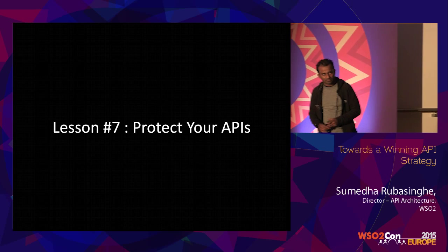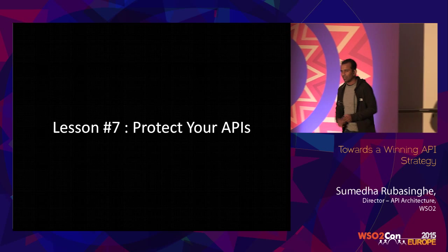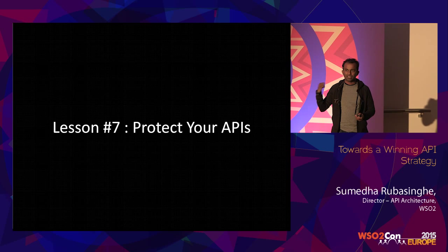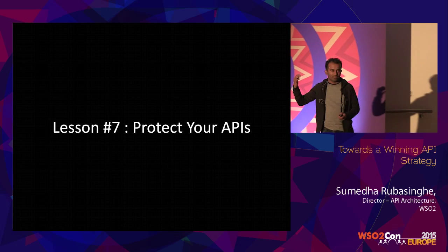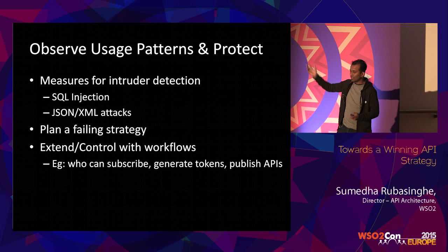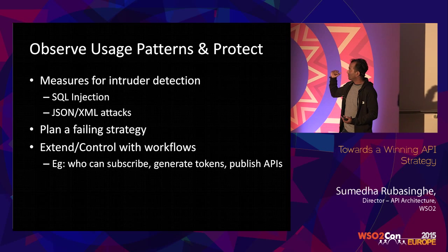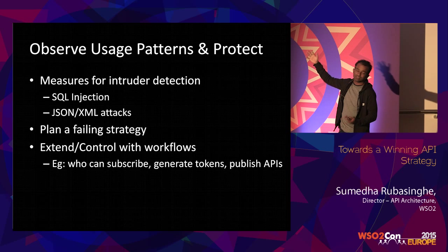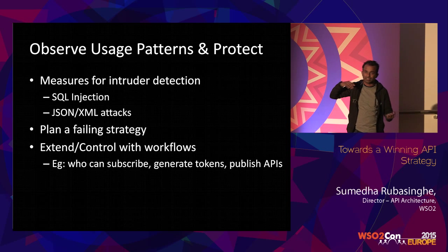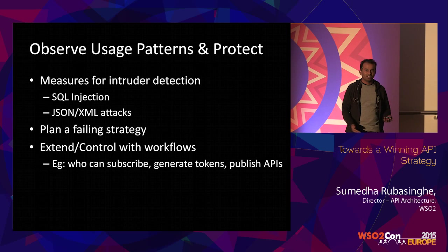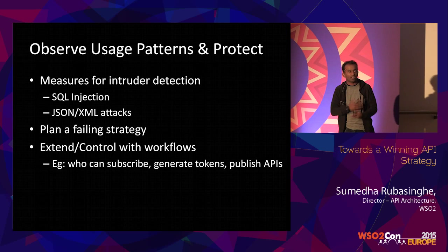Coming to the seventh one: what you are exposing is your business capabilities. What it would mean is you should protect your APIs from different things. For example, if you are allowing your product database or orders to be queried, you should have all of these measures to protect against SQL injection, XML attacks, JSON attacks — all those built in within your APIs.